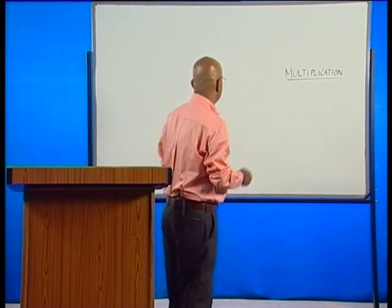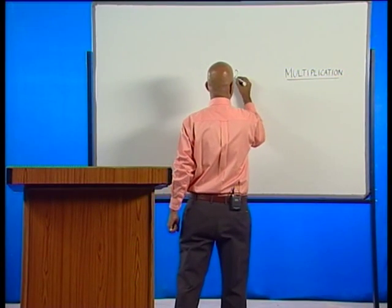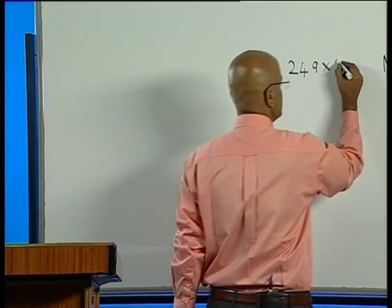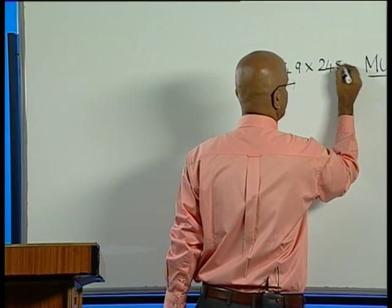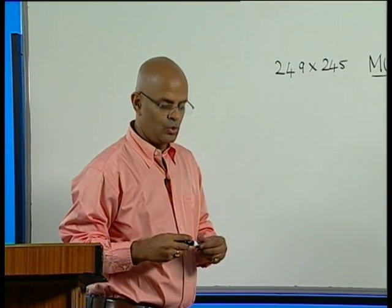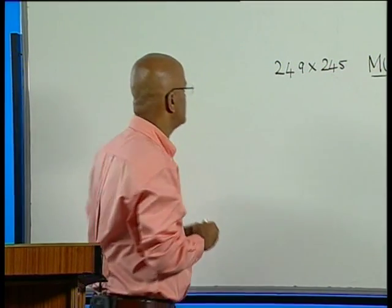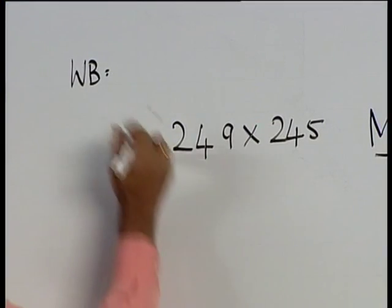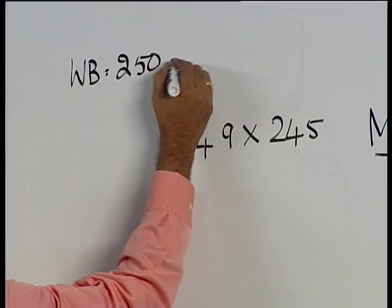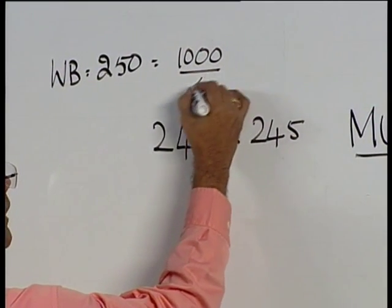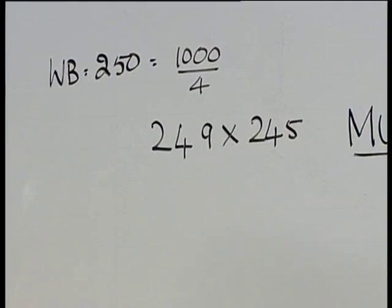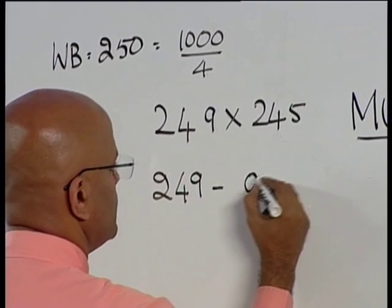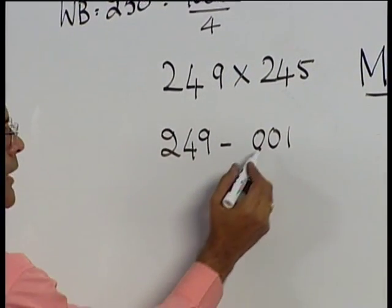The next problem we are going to consider is 249 multiplied by 245. Again, there is no room for fear or anxiety. Stick to the basics. Working base correct must be what? It is 250, which you are going to get as 1000 divided by 4.